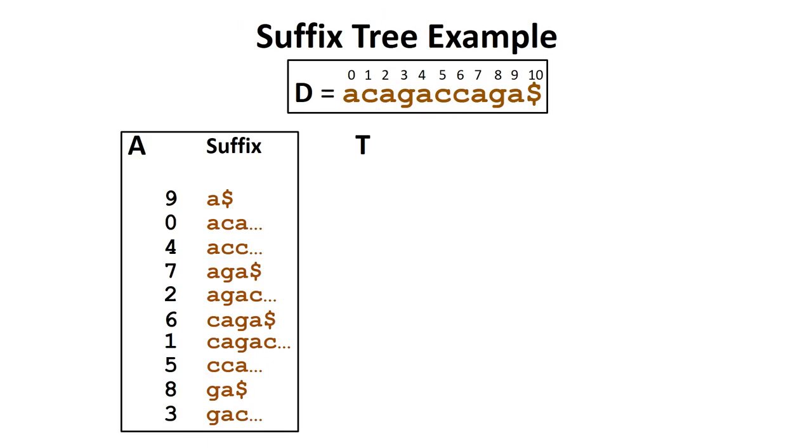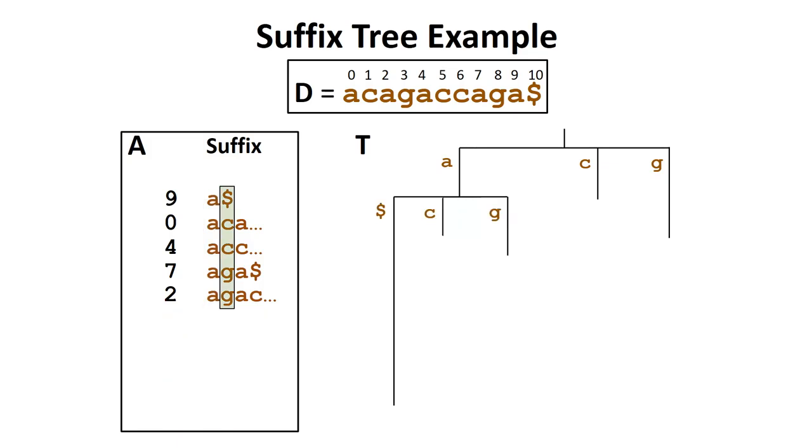We will examine each column of the suffix array and create a separate branch for each unique nucleotide. For example, in the first column of the suffix array, we have the nucleotides a, c, and g. Hence, we will create three branches in the first level of the tree. For the subset of suffixes that begin with an a, the second column consists of the dollar sign, c, and g. This means we will create three branches at the second level of the tree.